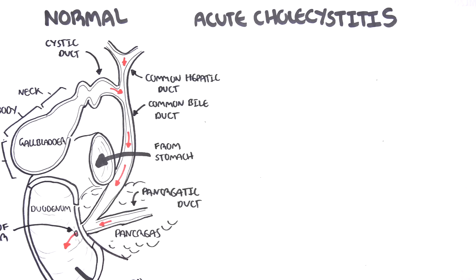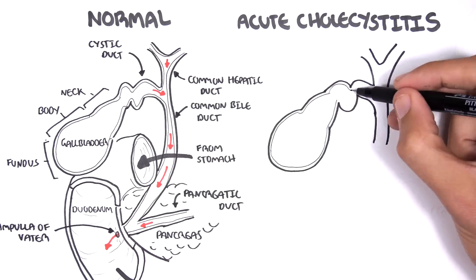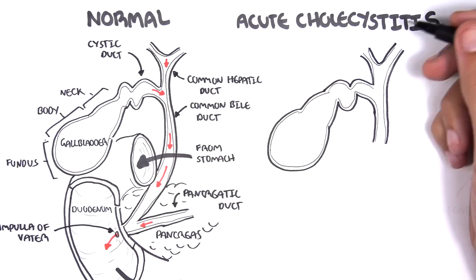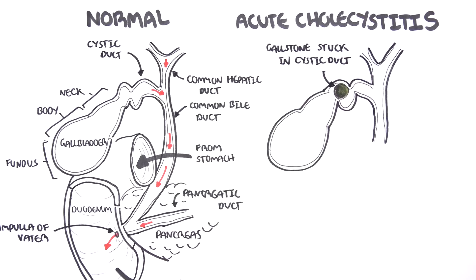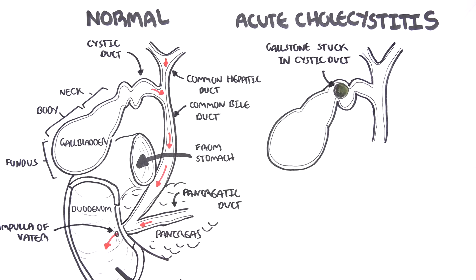In acute cholecystitis, a gallstone, which was formed in the gallbladder, gets stuck in the cystic duct. Now, a lot of us actually have gallstones in our gallbladders, but they don't cause any problems. We are asymptomatic.